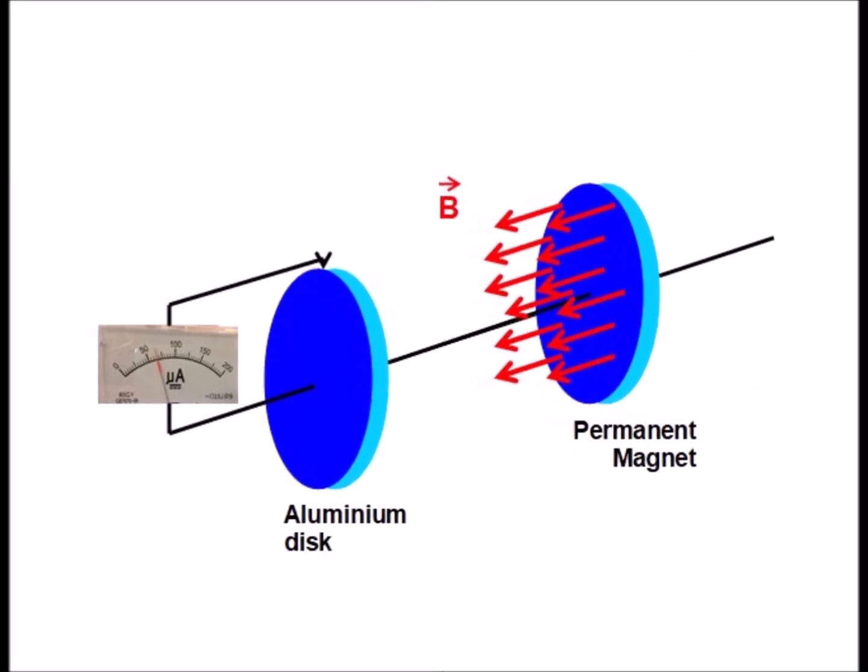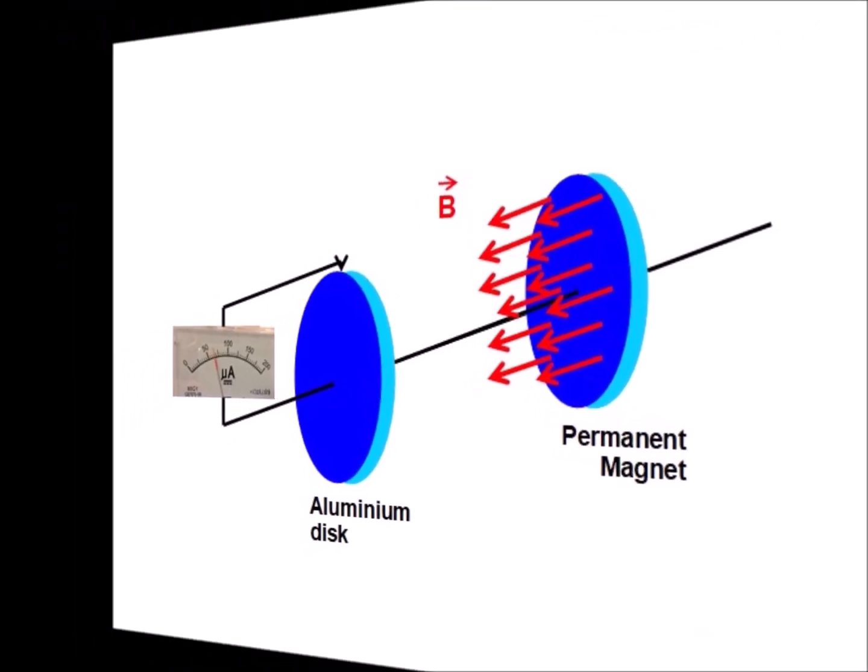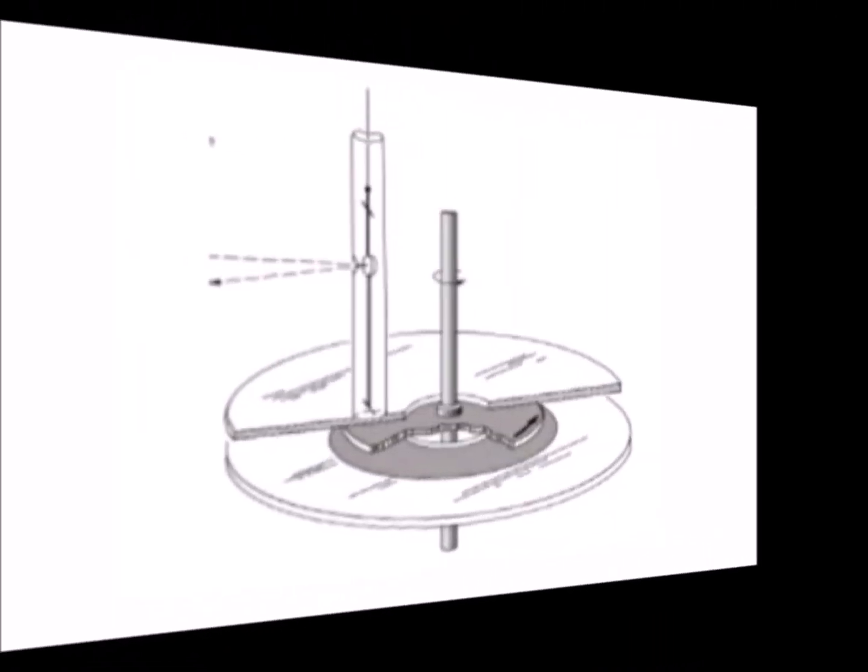Obviously, no magnetic field is produced by moving the conductor. The idea therefore came to put the conductor in rotation. Two fundamental experiments then seemed to confirm Maxwell's theory: the Faraday disk and the Rowland disk.